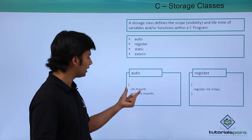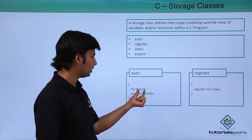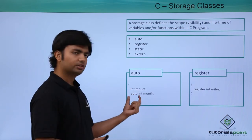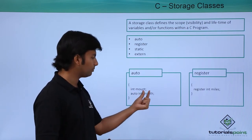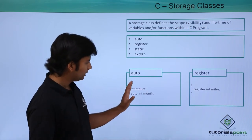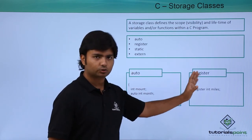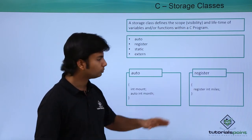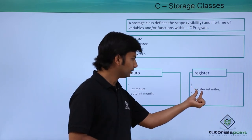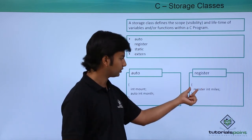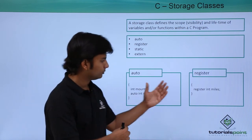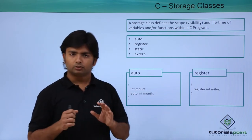For example, you can write 'auto int month' — so first the storage class, then the data type, then the name of the variable. Similarly, for the register storage class, the syntax is: register, then data type, then the name of the variable. We will discuss what each of these means in coming videos, but this is the basic syntax reference.